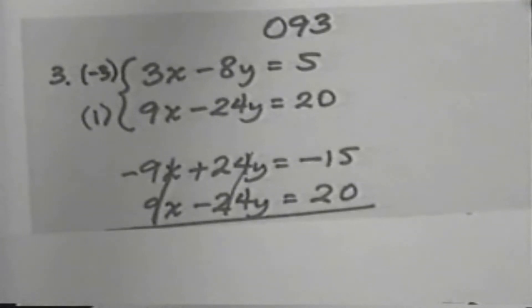And so, on the left-hand side of the equation, I have simply 0. On the right, negative 15 plus 20 is 5. And so, we have 0 is equal to 5.